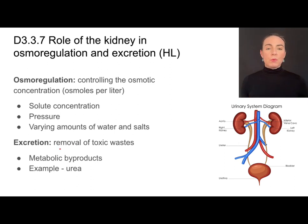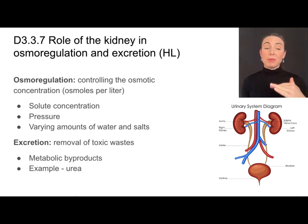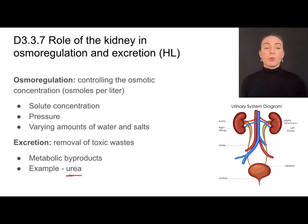Excretion is the removal of toxic wastes. Toxic wastes are usually a product of metabolism, so those byproducts of metabolism sometimes can be toxic and need to be excreted. For example, urea, which is a product of protein digestion.